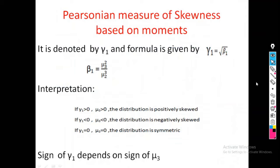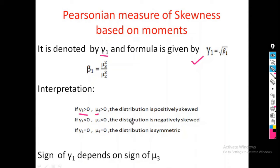Pearson's measure of skewness based on moments is denoted by gamma 1. Gamma 1 is the square root of beta 1, and beta 1 is mu3 squared divided by mu2 cubed. Mu3 is the third central moment and mu2 is the second central moment. The interpretation is: if gamma 1 greater than 0, or mu3 greater than 0, the distribution is positively skewed. If gamma 1 less than 0 and mu3 less than 0, the distribution is negatively skewed. If gamma 1 equals 0 and mu3 equals 0, the distribution is symmetric.